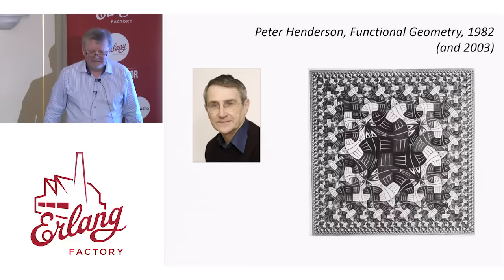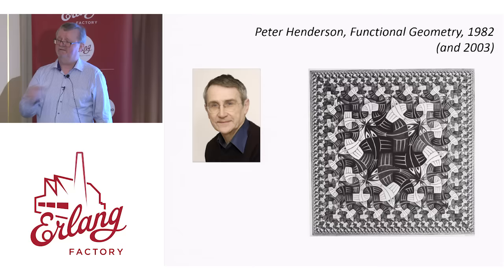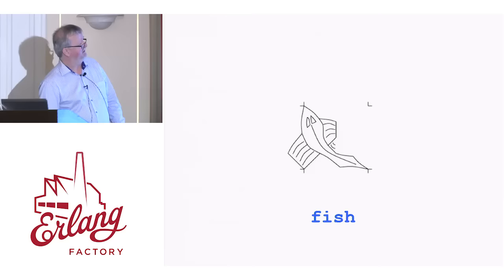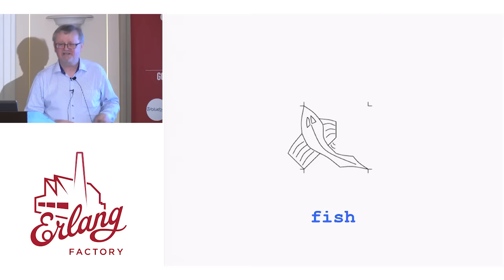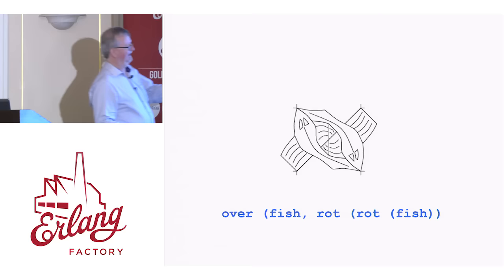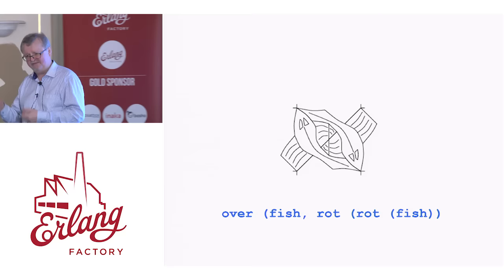In those days, if you wanted to do graphics, you would write the sequence of graphics commands — very much word at a time. Peter didn't want to do that. He wanted to work with a whole value — with a picture as a value. For example, this picture — let's call this one fish. If you can treat the whole picture as a value, then you can start defining combining forms for putting them together. This fish actually fits very nicely together with itself — here's a fish overlaid on a double rotation of the fish. The rotation is through 90 degrees, so double rotation is 180 degrees and turns the fish upside down. As you can see, they fit together nicely — part of Escher's genius.